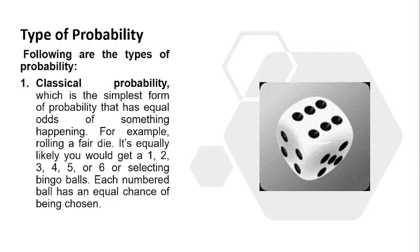In classical probability, any event or anything has equal odds of happening. For example, rolling a fair die—it is equally likely that you will get 1, 2, 3, 4, 5, or 6. Each numbered ball has an equal chance of being chosen.